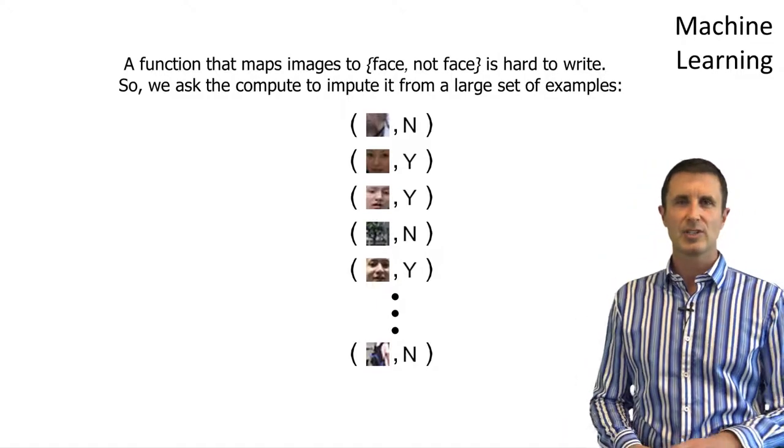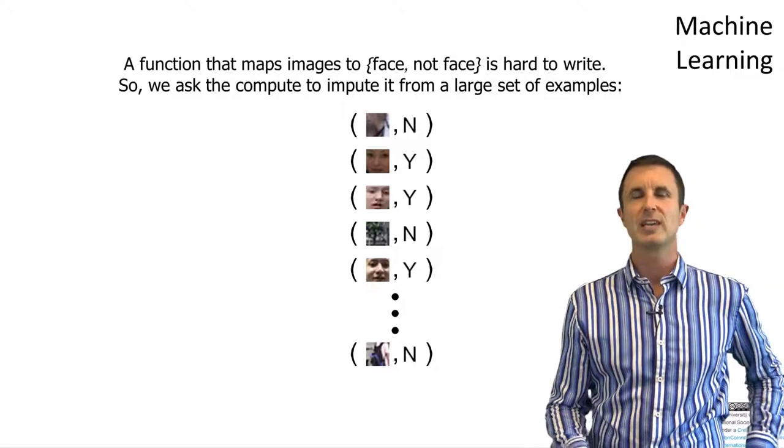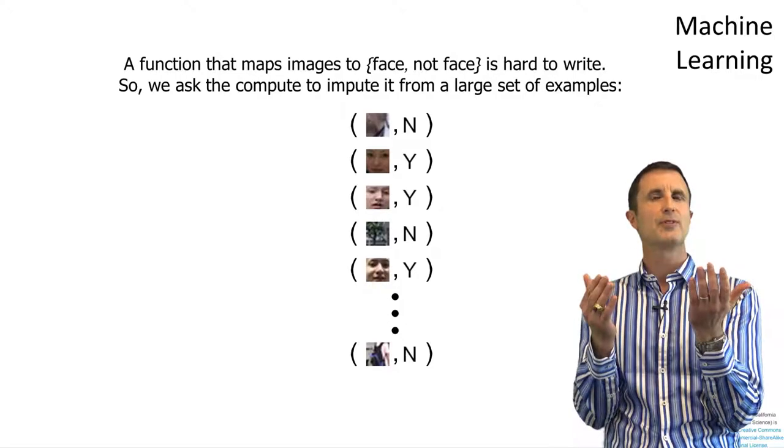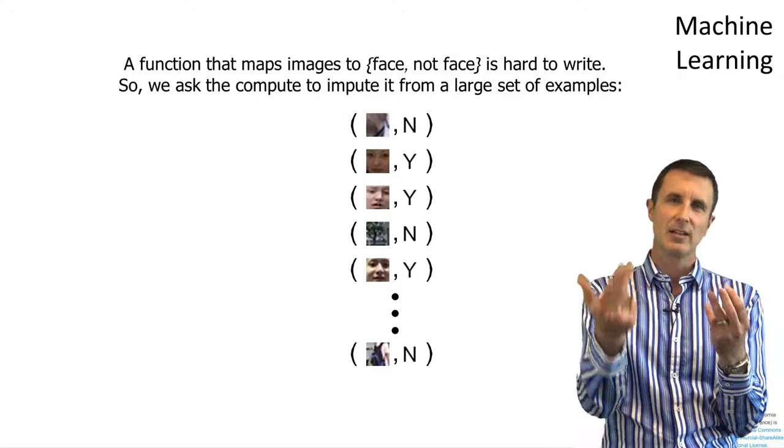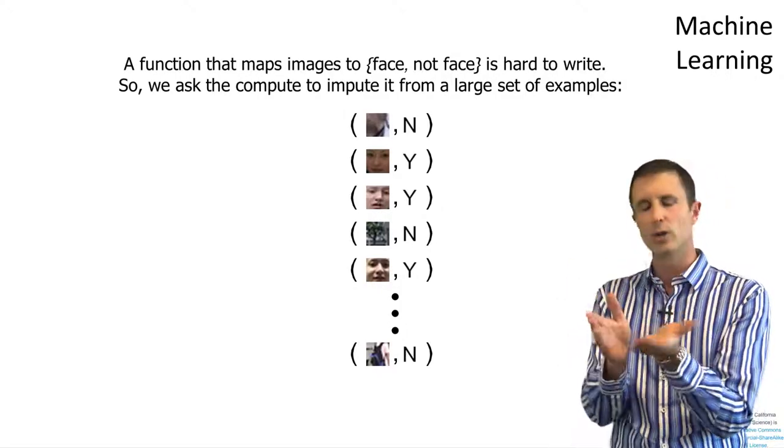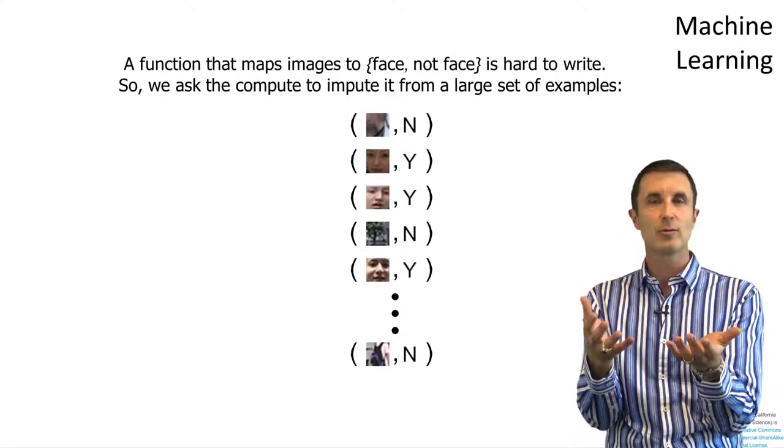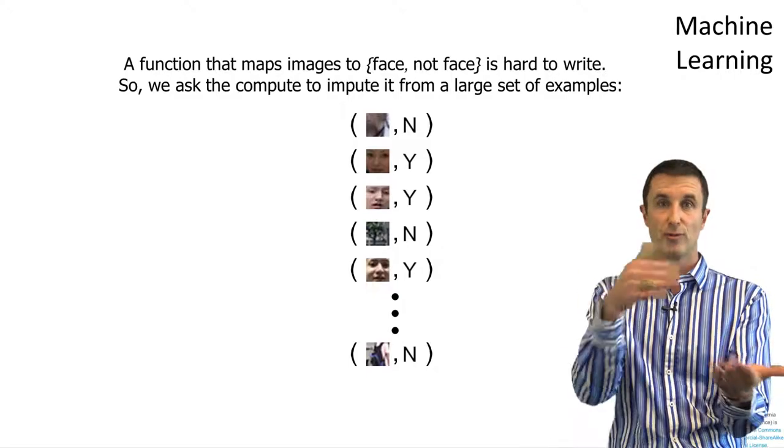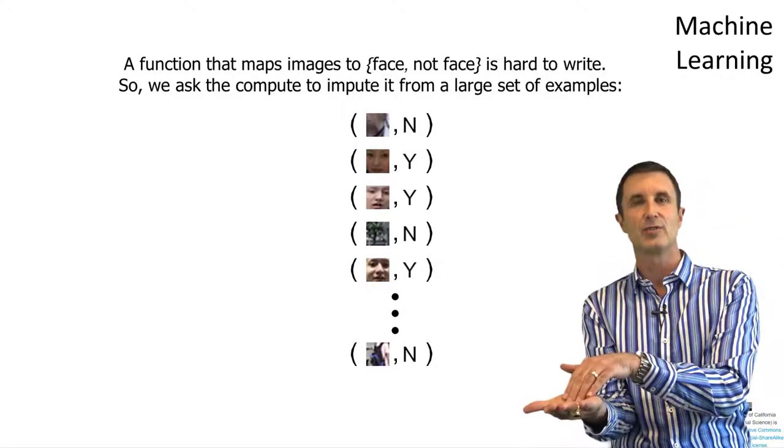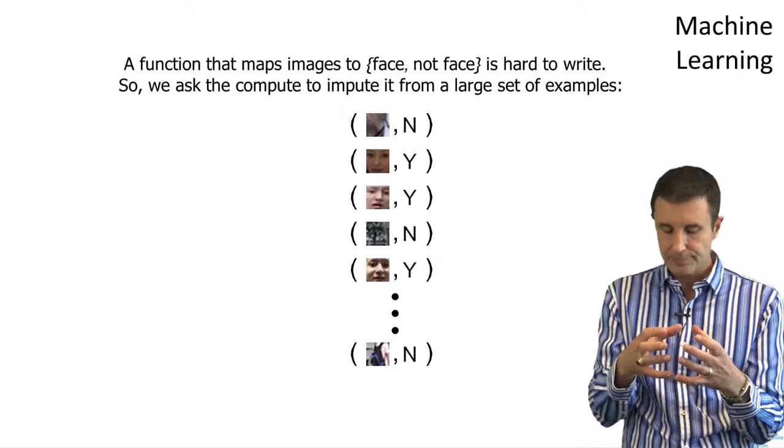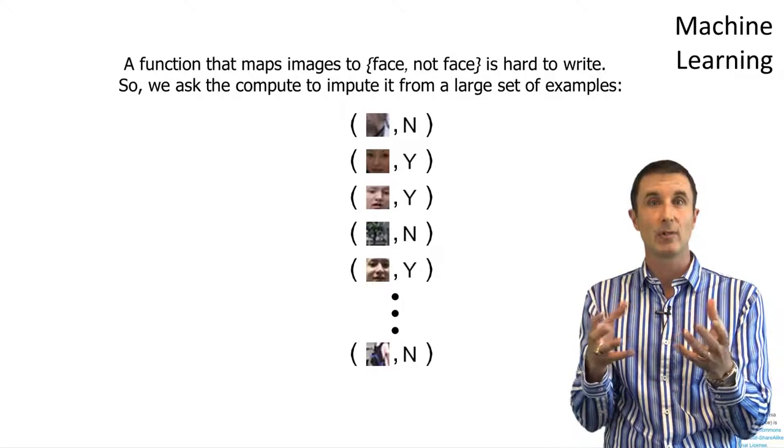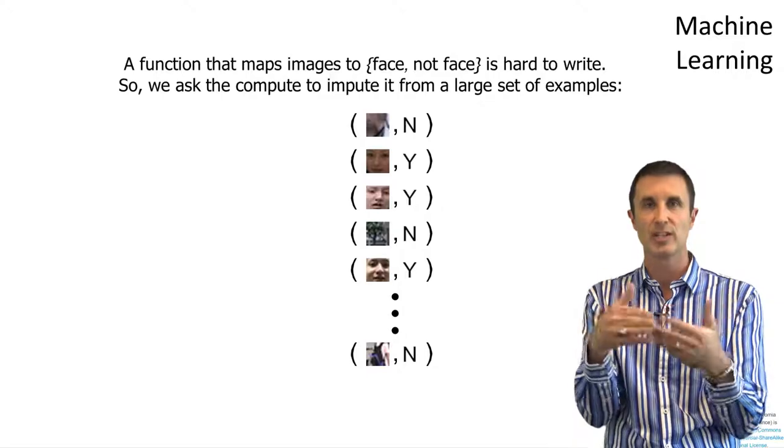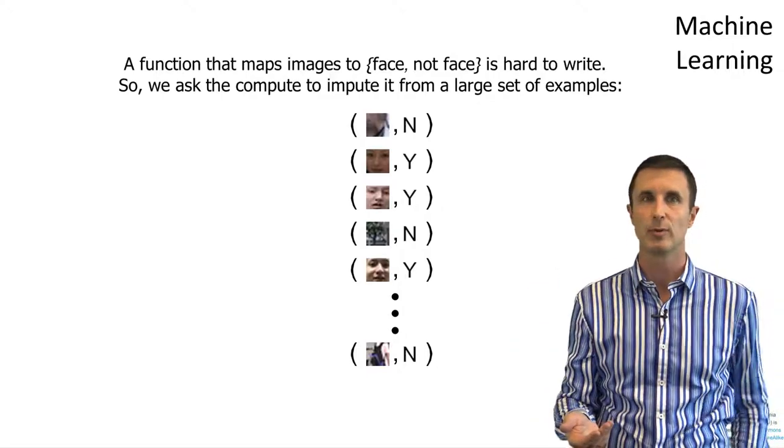And then anything I don't say is a face is clearly not a face. And so that brings us to sort of a machine learning problem, which is I give you some examples, but I don't tell you exactly what the function is. And now I'd like you, you being the computer, I'd like the computer to come up with a general function that will map inputs to outputs. So images to whether or not it's a face. And that function needs to generalize. That is, it can't just work on the examples I showed it, it's supposed to work on unseen future examples.